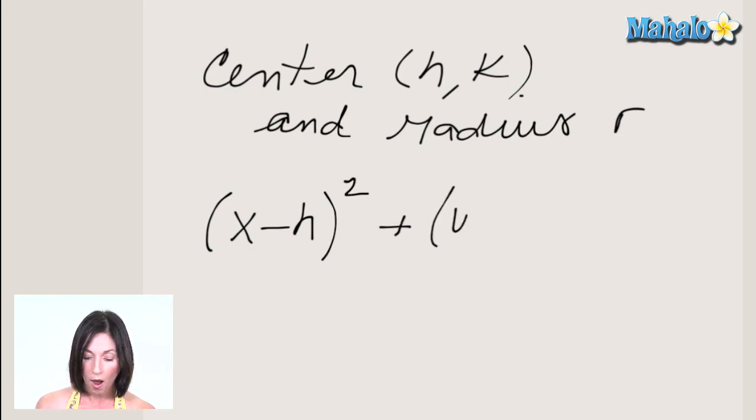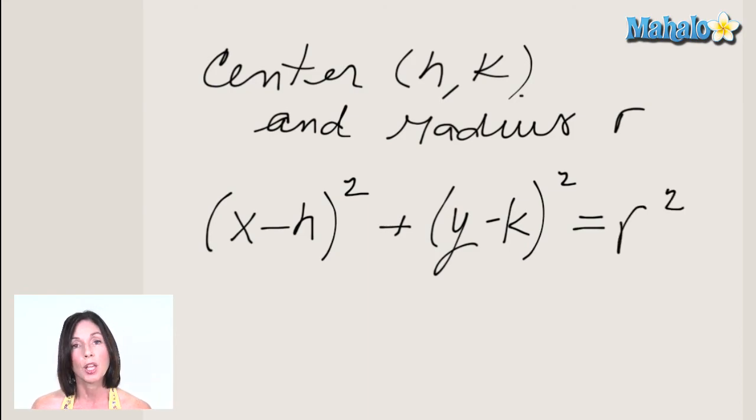plus y minus k, k is the y-coordinate of the center, squared, and that's equal to the square of the radius.